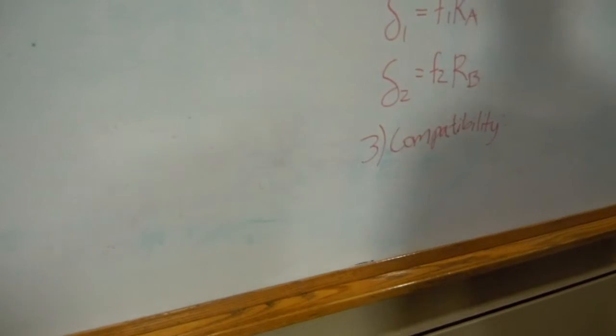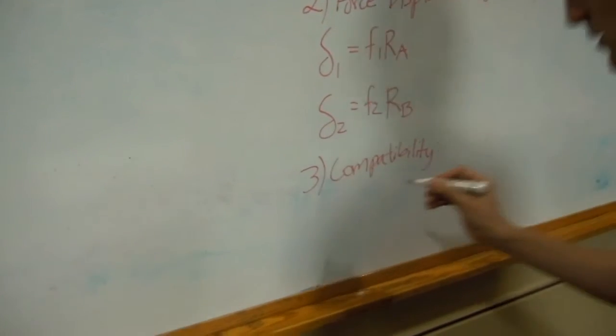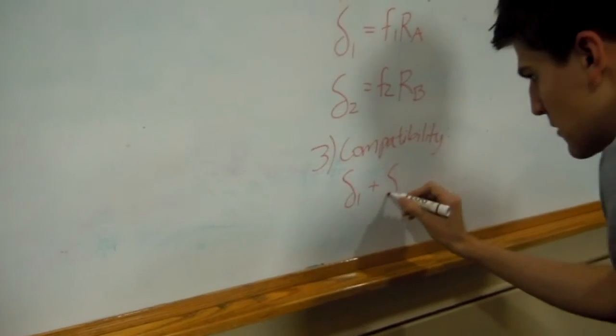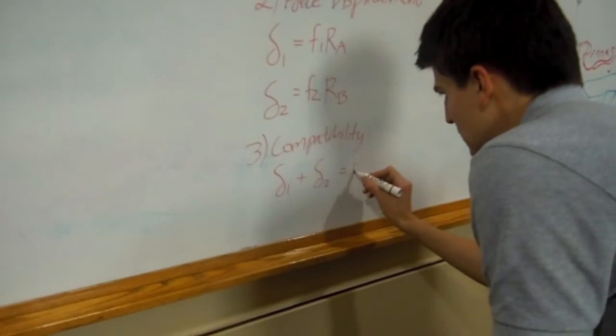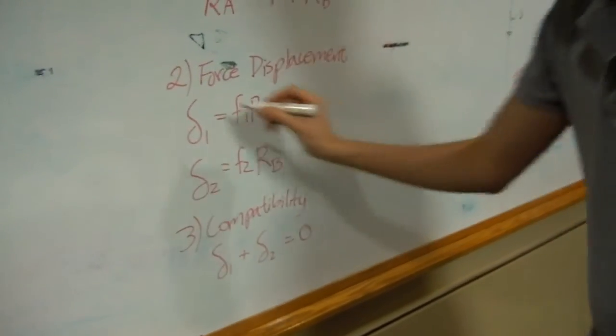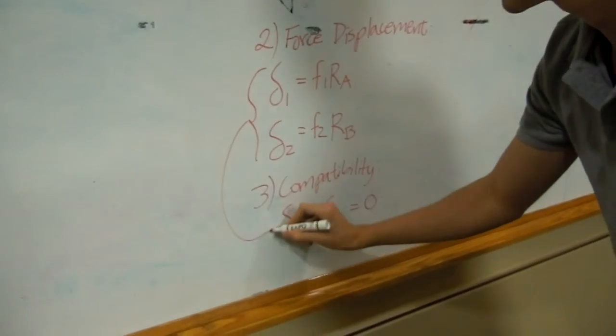Just to write down the compatibility equation. Which in this case it would be delta 1 plus delta 2 equals 0. So now we can grab these two equations and solve the third one.